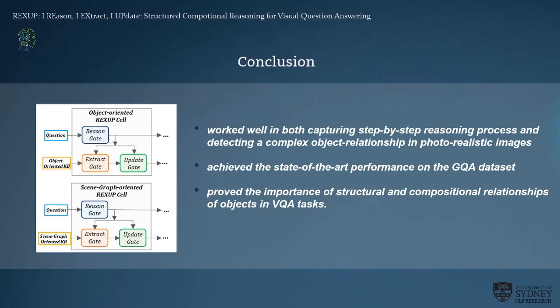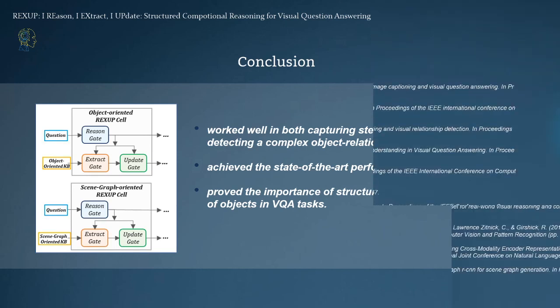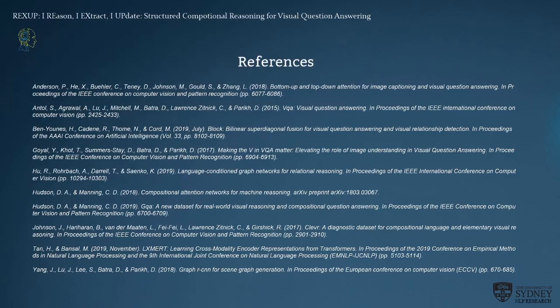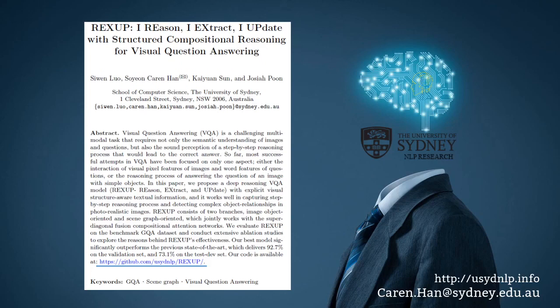In conclusion, our work performed well in both capturing the step-by-step reasoning process and detecting complex object relationships in photorealistic images, achieving state-of-the-art performance on the GQA dataset, which requires deep reasoning and complex photorealistic images. We proved the importance of structured and computational object relationships in VQA tasks. Please find our references as follows. For more details, please refer to the paper. If you have any questions, please visit our website usudnlp.info or send an email to our corresponding author. Thank you.